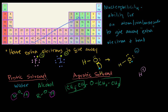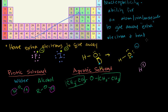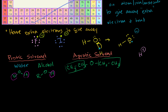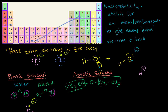In a protic solvent, if a nucleophile is likely to react with its solvent, it will be bad at being a nucleophile — it can't give its electrons away to what it needs to in, say, an SN2 reaction. In a protic solvent, things that are really electronegative and really small, like fluoride, get blocked by hydrogen bonds. Fluoride is very negative and tightly packed — its electrons are very close in. It's a much smaller ion than iodide.